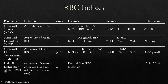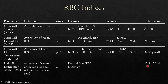RDW (red cell distribution width) is the coefficient of variation of red blood cell volume distribution, representing variation in size of RBCs. The unit is percentage, and it is derived from the RBC histogram. Reference interval: 12.5–15.5%.